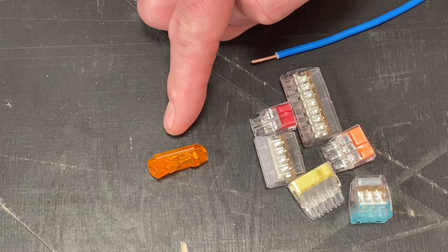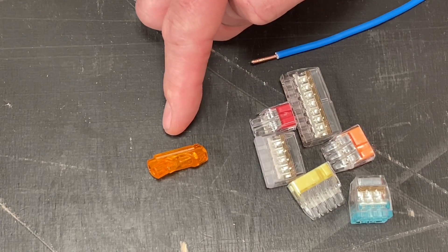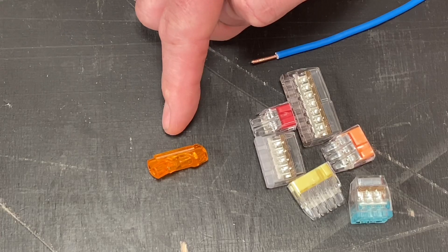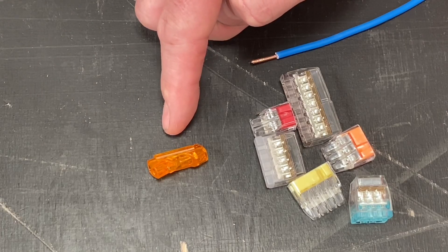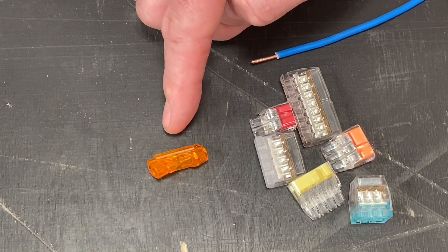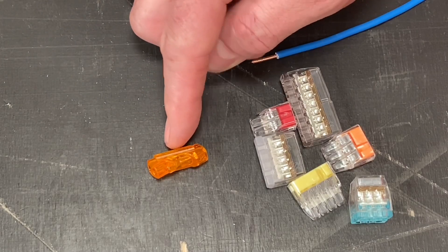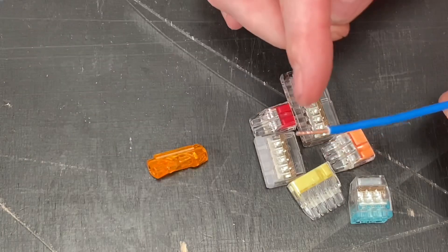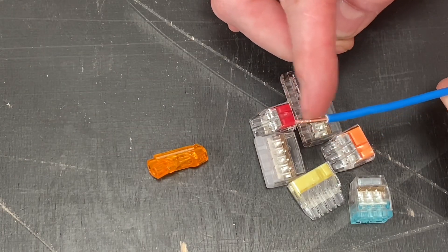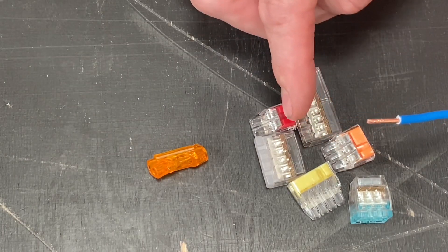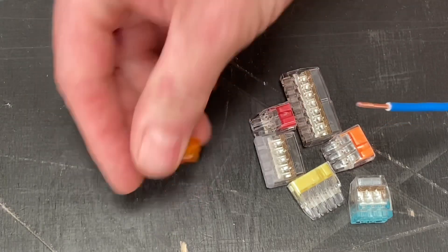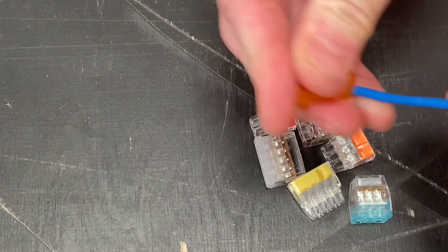Now we have the splice connector. This will do 0.5 millimeter squared to 4 millimeter squared in solid copper, and in stranded copper from 1 millimeter squared to 2.5 millimeter squared. It's also rated at 32 amps. So if we just show it in use, exactly the same as before, 13 millimeters of insulation removed, and then we just push it simply into the splice itself.